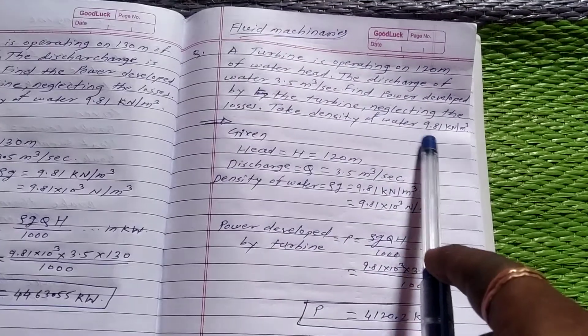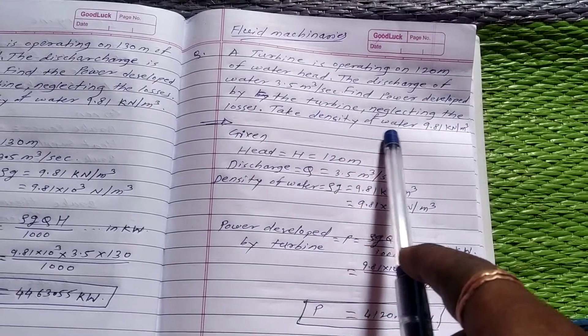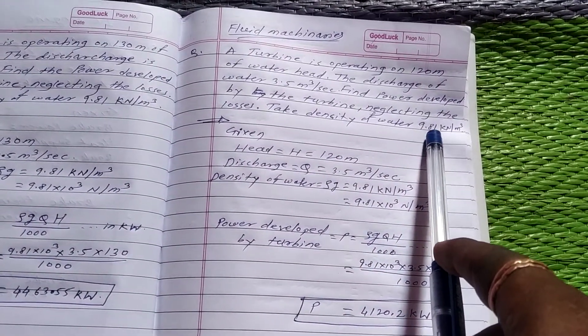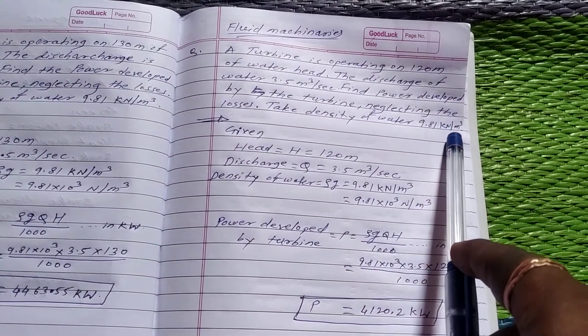Take density of water. In this problem, density of water is given 9.81 kN per meter cube.